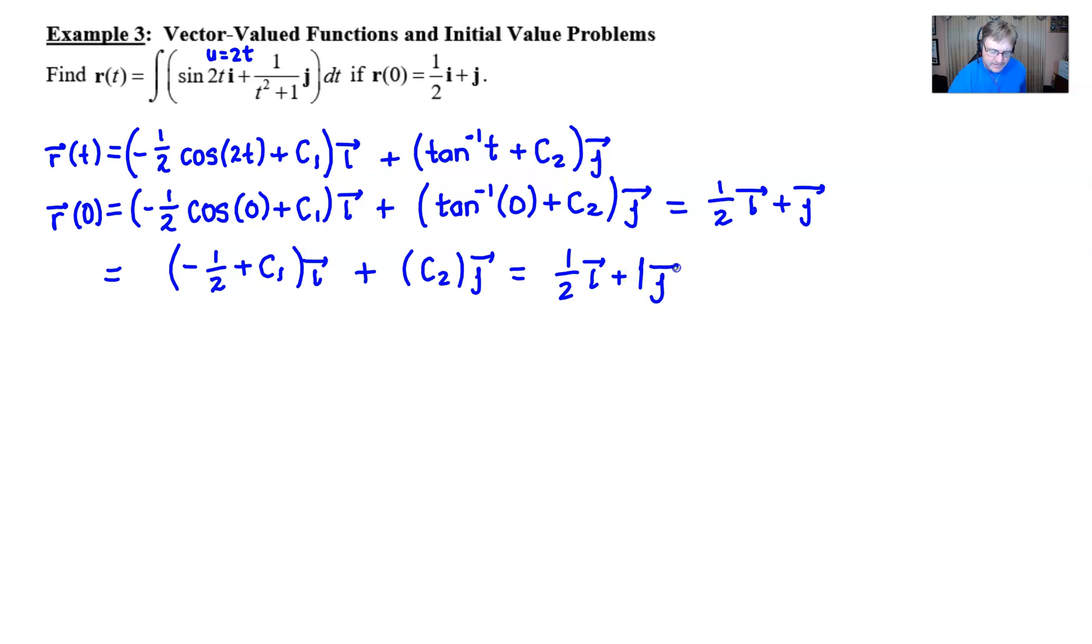Now let your common sense take over. If these two vectors, the two that I'm underlining here in orange and gray, are equivalent to each other, then that forces their components to be equivalent. So that means the i component, or x component, is equal to the x component on the other side. Solve this for c1 and you get 1 when you add a half to both sides. Same thing works for c2. It's equal to 1 and c2 is solved for.